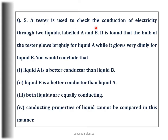Question number 5: A tester is used to check the conduction of electricity through two liquids labeled A and B. The bulb glows brightly for liquid A while it glows very dimly for liquid B. What can we conclude? The options are: liquid A is a better conductor than liquid B; liquid B is a better conductor than liquid A; both liquids are equally conducting; or conducting properties cannot be compared in this manner. Since the bulb glows brightly for liquid A and very dimly for liquid B, it means there is very little current in B. Hence we conclude that liquid A is a better conductor than liquid B.